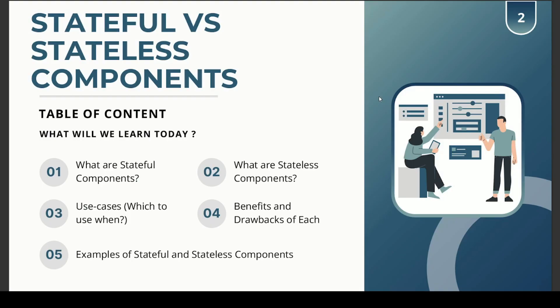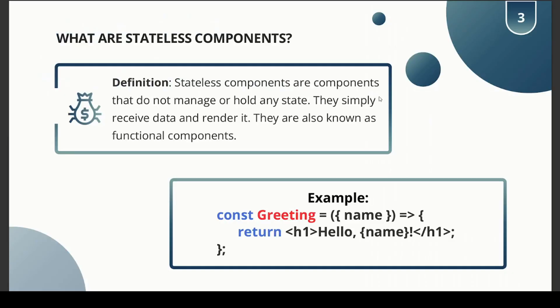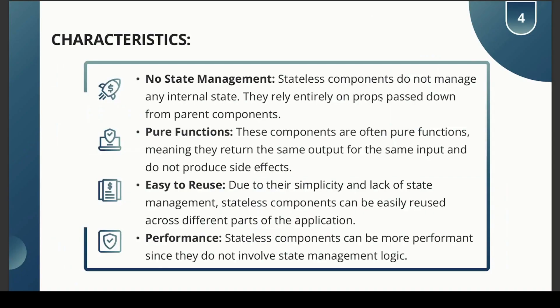We'll also see examples of stateful and stateless components in the code video. So let's first look at stateless components. Stateless components are components that do not manage or hold any state — they simply receive data and render it. They are also known as functional components. For example, a component that receives a prop like a name and just uses that prop without altering that data in any way.